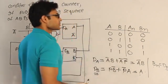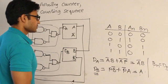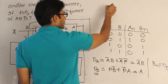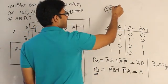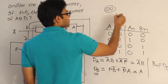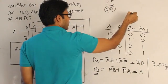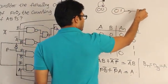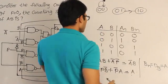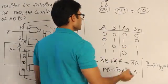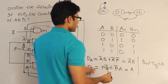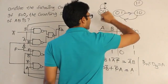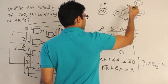So the next state can be written as: if present state A,B is 0 0 the next state is 0 0; if 0 1 the next state is 1 0; if 1 0 the next state is 0 1; and if 1 1 the next state is 0 1.